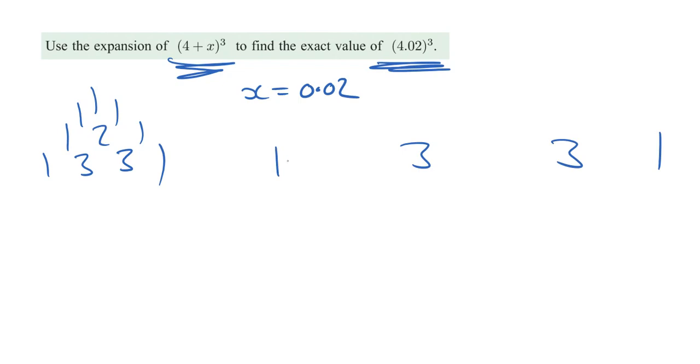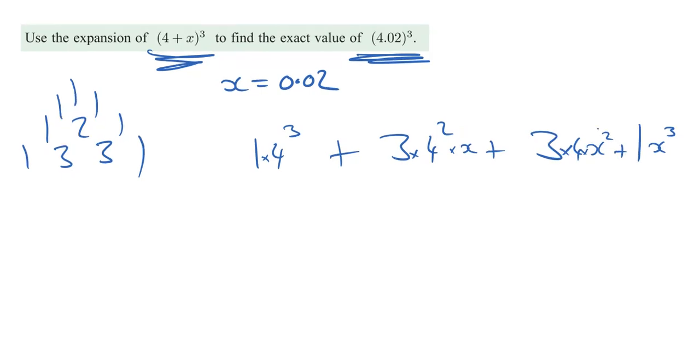And then we're going to have a is four. So we're going to have 4 cubed, 4 squared, and a 4 there. B is x. So we're going to have an x, x to the power of 3, x squared, x there.